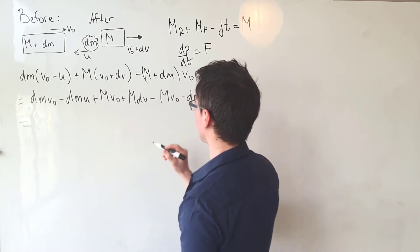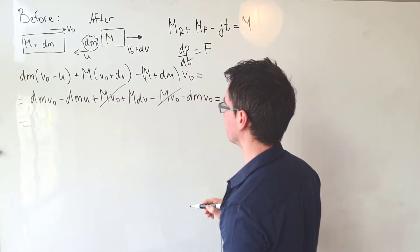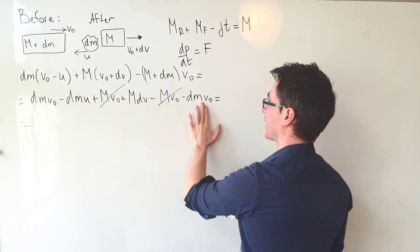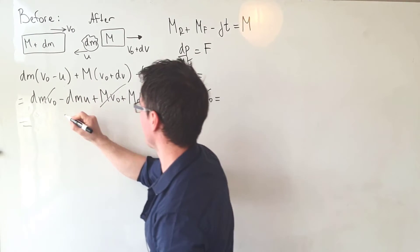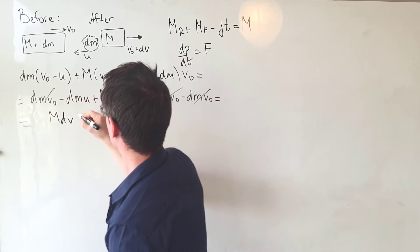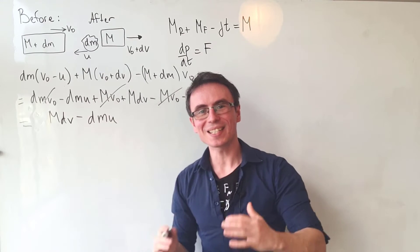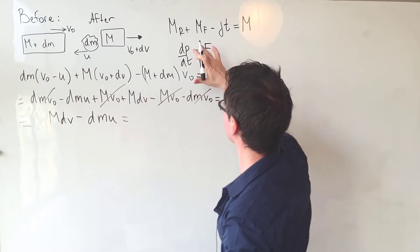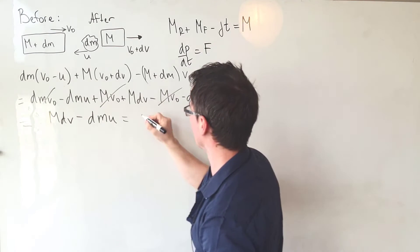Now let's do some cancellation. We have +m·v₀ and -m·v₀ cancelling, and +dm·v₀ and -dm·v₀ also cancelling. What we're left with is m·dv - dm·u, which is our expression for the change in momentum.